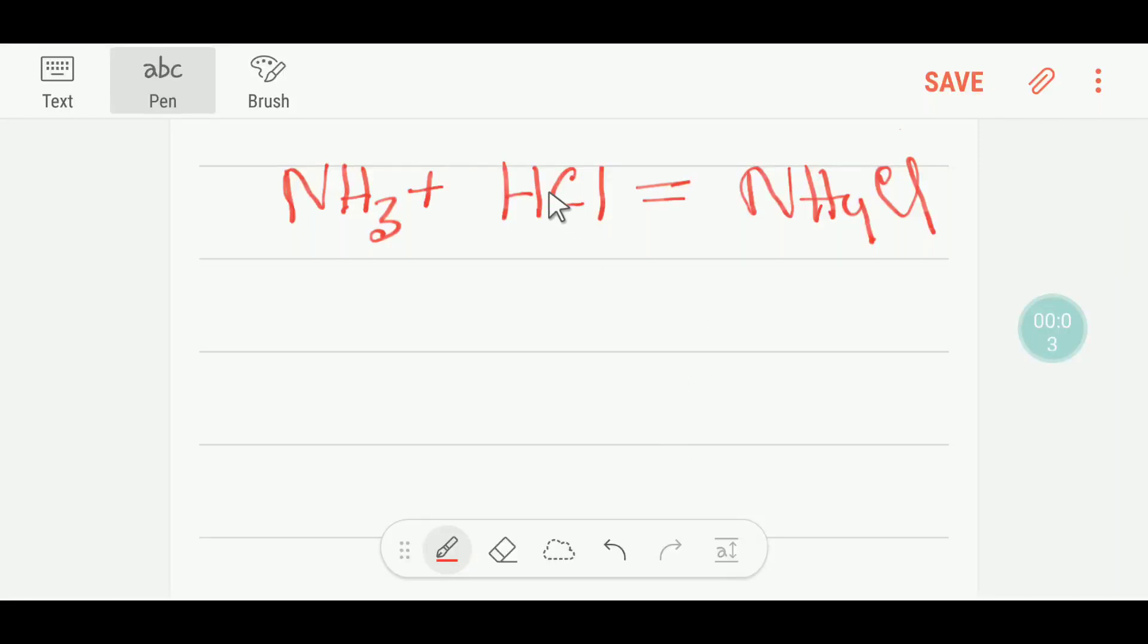Welcome to Chemistry Tutorial 360. Today we are going to balance this reaction: NH3 + HCl = NH4Cl. This is ammonia, this is HCl, and this is ammonium chloride. To balance this reaction, at first I will draw a table like this.